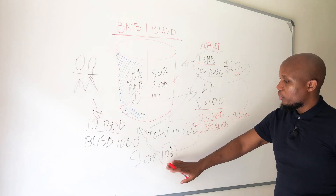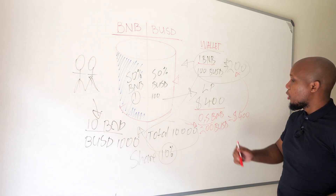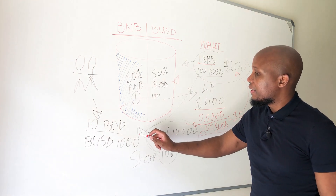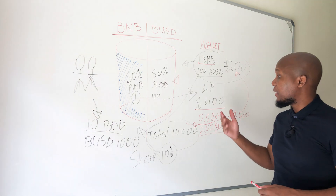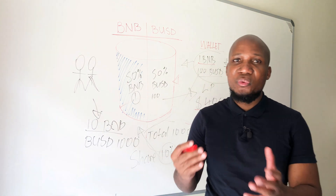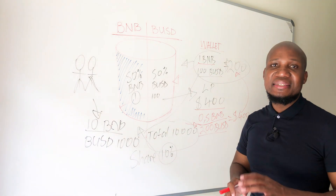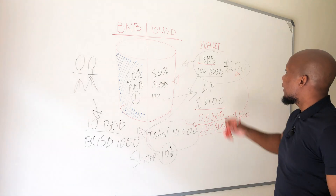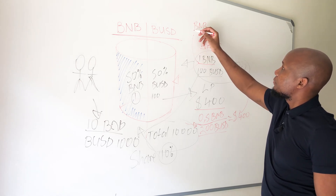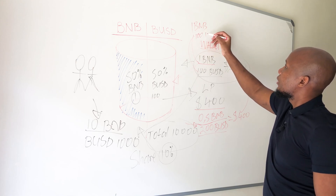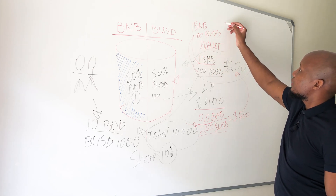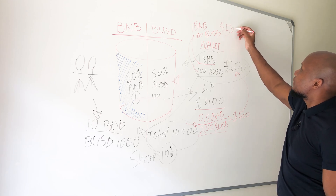Remember, we are entitled to 10% of the pool, which is how we got 0.5 BNB and 200 BUSD after the price fluctuated. Now, as much as we made a profit of $400, the question is: what would have happened if we had simply held these assets in our wallet and never provided liquidity? From the beginning, we had 1 BNB and 100 BUSD. Because BNB is now trading at $400, plus the 100 BUSD, our total value would actually be $500.